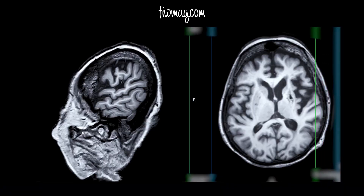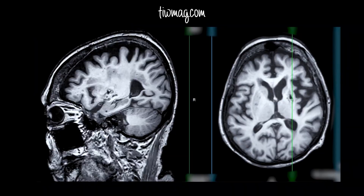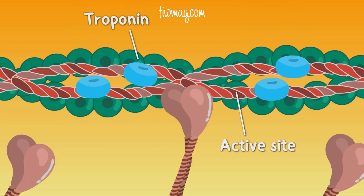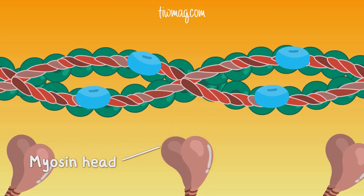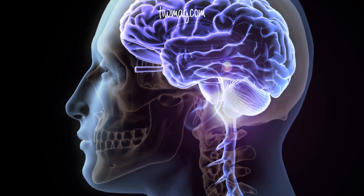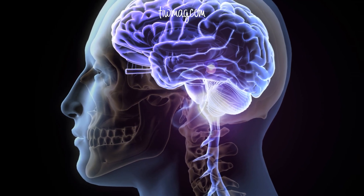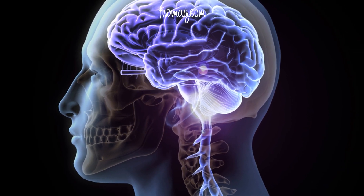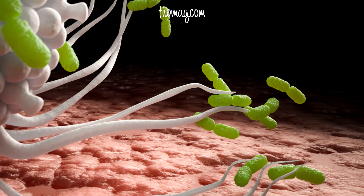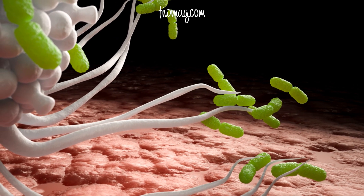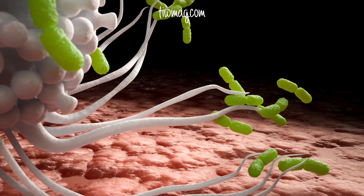MS is characterized by inflammation, demyelination, neuronal loss, and gliosis. Myelin is a fatty substance that forms a sheath around nerve fibers, primarily in the brain and spinal cord. Gliosis is a reactive process where glial cells, particularly astrocytes, proliferate and become larger in response to the disease. Myelinated axons in the CNS are the primary target of MS attacks, which can cause varying degrees of damage to both myelin and the underlying axons.